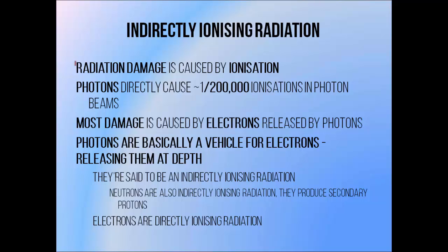Radiotherapy kills tumors via ionization damage, by knocking electrons off atoms. In a radiotherapy photon beam, the photons themselves are only directly responsible for one out of every 200,000 ionizations. The rest of the ionization, and therefore the damage, is caused by electrons which are released via interaction with photons, known as secondary electrons. As such, photons are basically a vehicle for carrying energy deep inside tissues where it can be transferred to electrons.